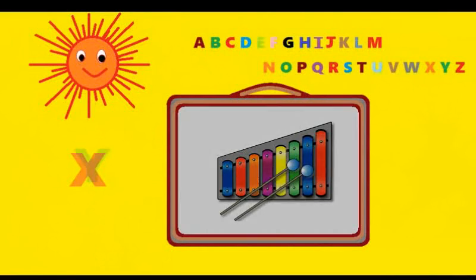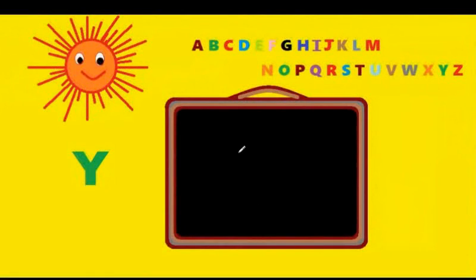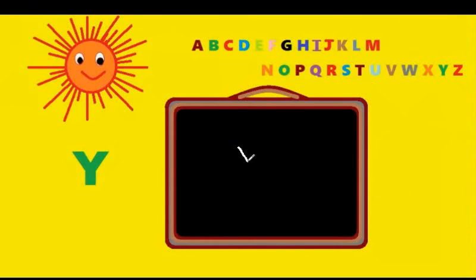Y. Capital Y is drawn like this: you have to draw a V and then draw a standing line from between. You have to draw a V, then lift your pencil and draw a standing line. That's capital Y. Y is for yak.